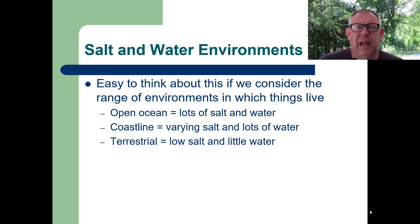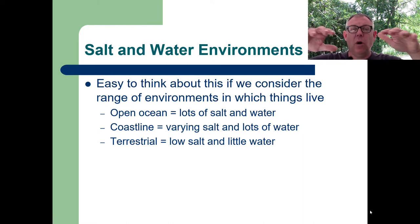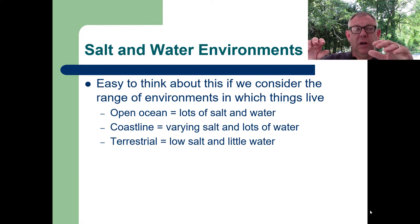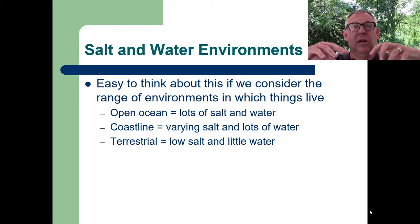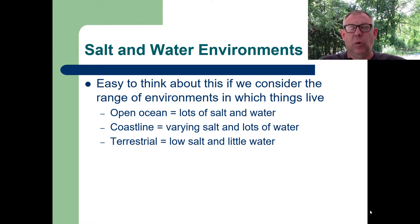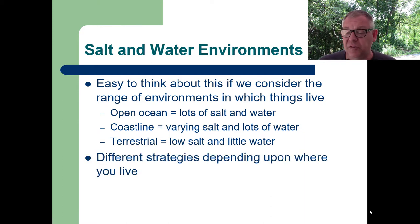It's easy to think about this in animals if we consider the range of environments in which animals live. Out in the middle of the ocean there's lots of water and lots of salt and it's relatively constant. As you approach the coastline, you have lots of water but varying levels of salt because fresh water comes in from rivers, creating brackish areas with varying salt concentrations. Then as you move onto the terrestrial portion of the earth, you've got low salts and little water. By studying animals in these different environments, you can see how animals regulate their salt and water — you have different strategies depending upon where you live.